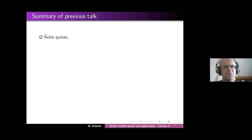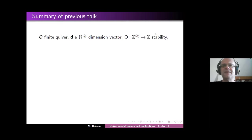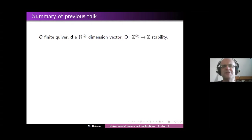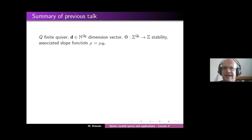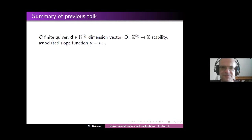As always, we work with a finite quiver, we fix a dimension vector, and we fix a stability function, which is just a linear function on Z to the Q0, where Q0 is just the vertices of the quiver. Associated to the stability, we had a slope function. With the aid of the slope function, we could define the notion of semi-stability, stability, and poly-stability.